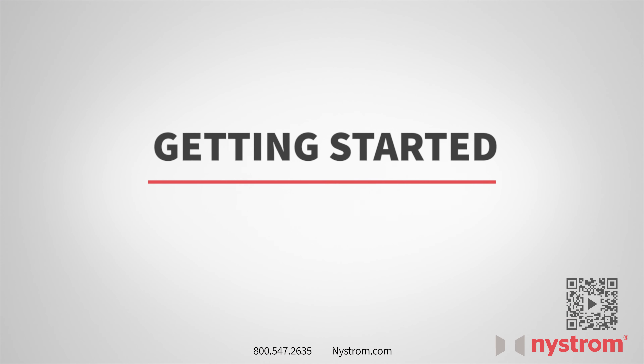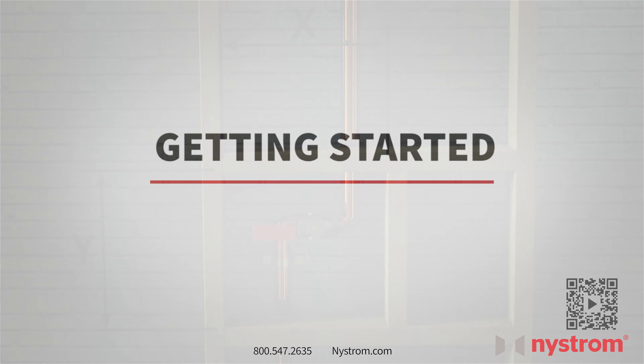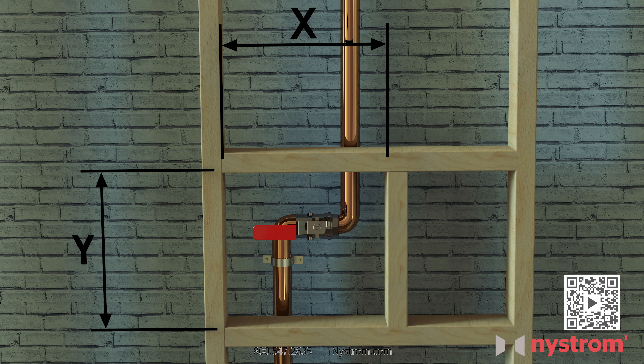Getting started. Begin by installing a framed opening at a specified location for your access door. The rough opening dimensions should be one quarter larger than the catalog size of the door. For example, a 12 by 12 door should have a rough opening of 12 and one quarter by 12 and one quarter.